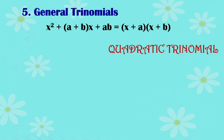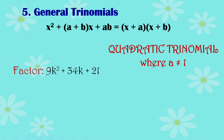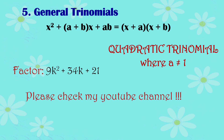For cases where the leading coefficient a is not equal to 1, such as factoring 9k squared plus 34k plus 21, the method is different. For the full detailed solution, please check my YouTube channel — all the lessons here are posted there and the link is available on my page.